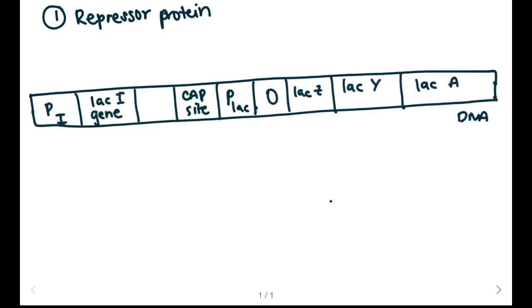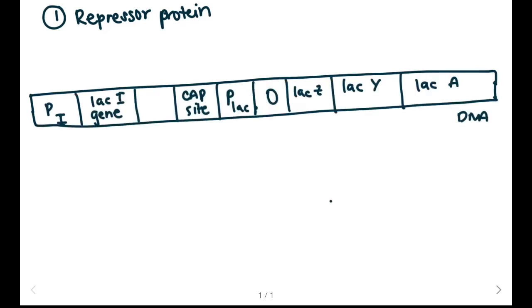Then we'll have all the components of the lac operon, and our regulatory gene is going to create the repressor protein which is coded by the lac i gene. Our repressor protein might look like this, and if it's present it will bind to the operator.